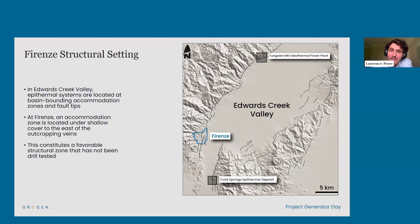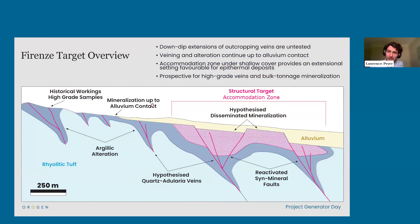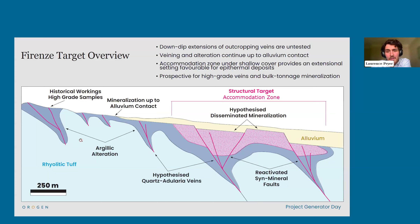This setting is similar to the high-grade Sleeper deposit in Nevada, discovered in the 1980s, which was under shallow alluvial cover next to alteration and mineralization exposed in the Slumbering Hills. The Sleeper deposit produced nearly 1.7 million ounces of gold from 1986 to 1996 from famously high-grade veins and surrounding stockworks returning head grades over 25 g/t. Origin envisions the potential for blind high-grade gold veins and disseminated mineralization in this untested structural zone, as well as at depth in the areas of outcropping veins.